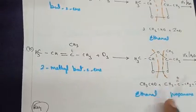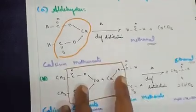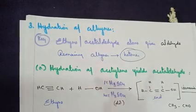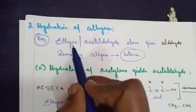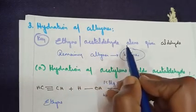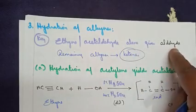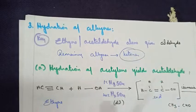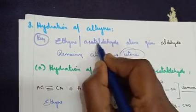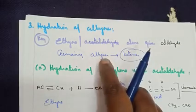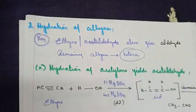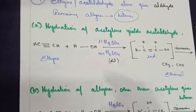The third type of preparation is hydration of alkyne. Alkyne has a triple bond. One important point to remember: ethyne alone gives an aldehyde group. All remaining alkynes give ketone as the product. I am repeating: ethyne alone gives aldehyde; all other types of alkynes — compounds with a triple bond — give ketone as the answer.